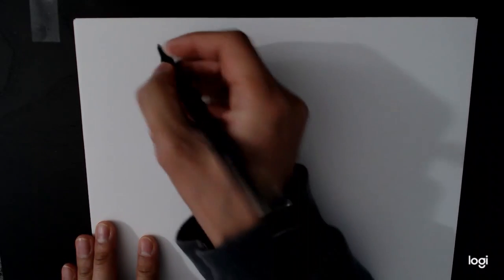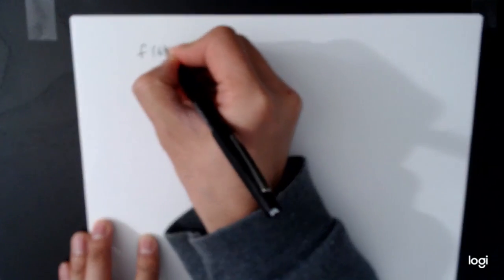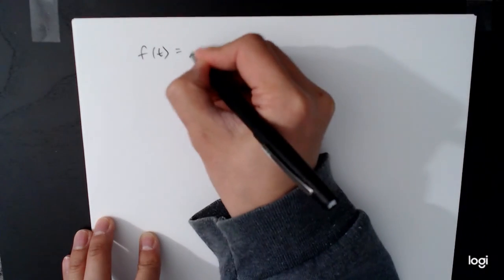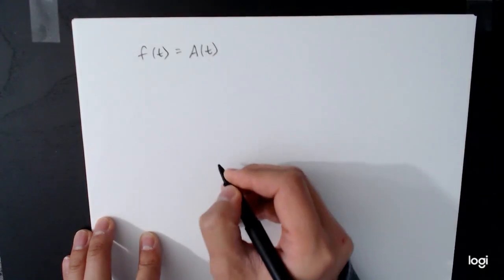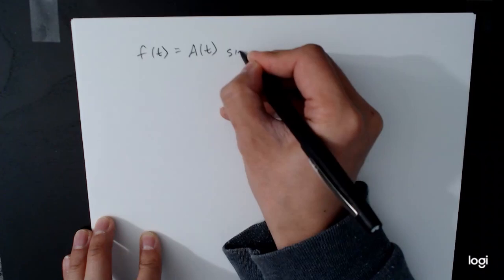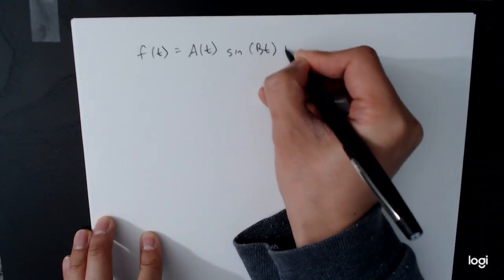The example of damped harmonic oscillation is an example of a more general type of amplitude varying formula. We can actually have any function we want as the amplitude. So f of t is equal to capital A of t, this is now a function, times sine of bt plus k.